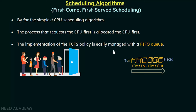The FCFS policy is easily managed by a FIFO queue, where elements are queued up and the first element is known as the head of the queue and the last element is the tail. When the head element completes its execution and goes out, the next element becomes the new head. If new elements come in, they are added to the tail and that element becomes the new tail. That is how a FIFO queue works, and by using it, the FCFS policy can easily be implemented.